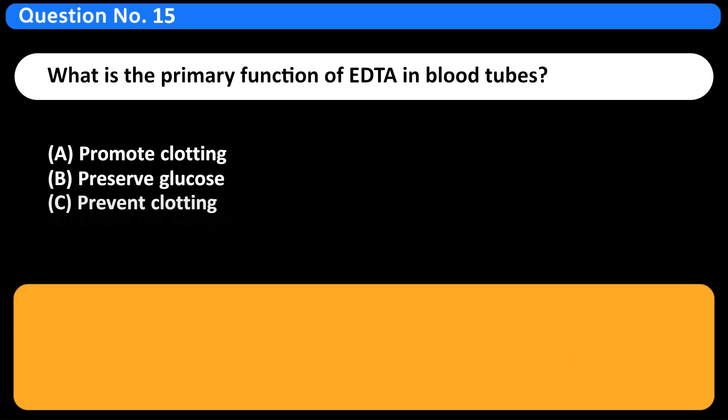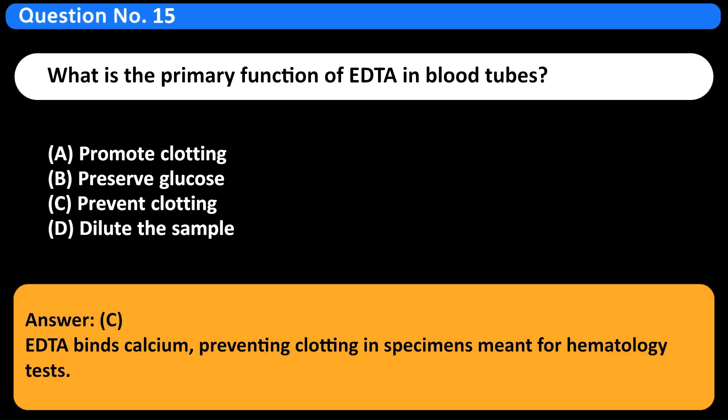What is the primary function of EDTA in blood tubes? A. Promote clotting. B. Preserve glucose. C. Prevent clotting. D. Dilute the sample. Answer C. EDTA binds calcium, preventing clotting in specimens meant for hematology tests.